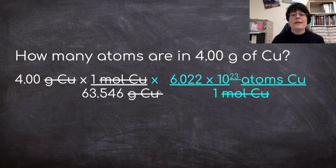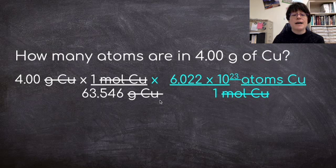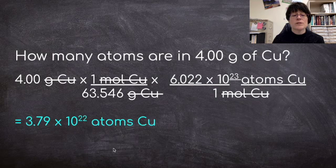And so I know that 1 mole of copper is equal to Avogadro's number, 6.022 times 10 to the 23rd atoms of copper. I put moles on the bottom so it cancels out. And now I'm in atoms. So I can go ahead and I can multiply across the top and divide by the number on the bottom. And when I do that, I get 3.79 times 10 to the 22nd atoms of copper in 4 grams of copper.